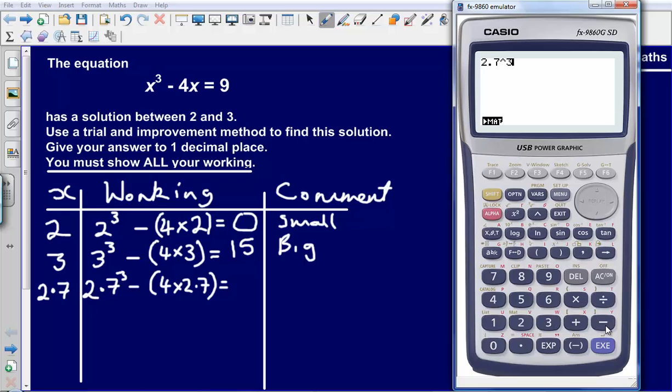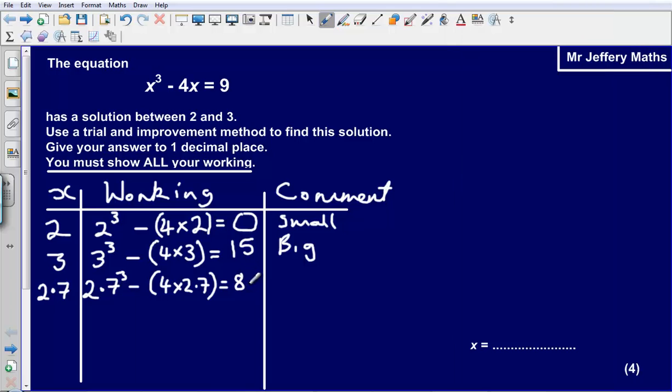2.7 cubed minus 4 times 2.7, and that gives us an answer of 8.883. So we will just call that 8.9. So that looks a pretty good answer.